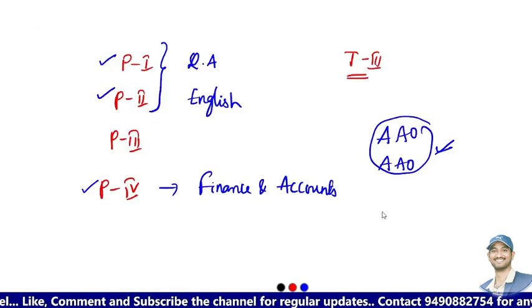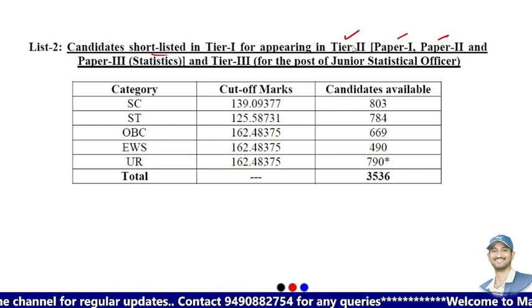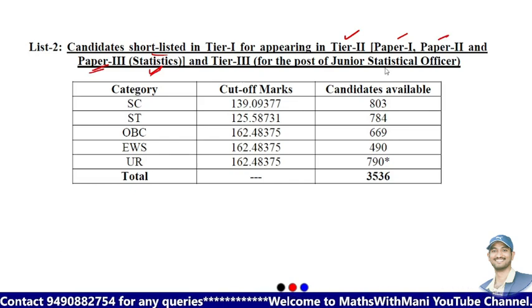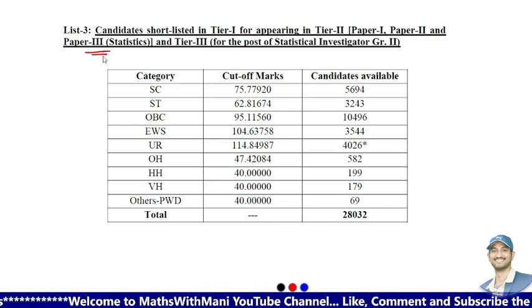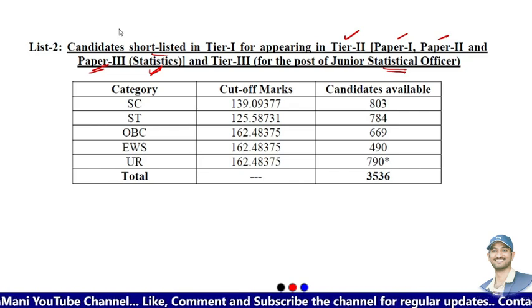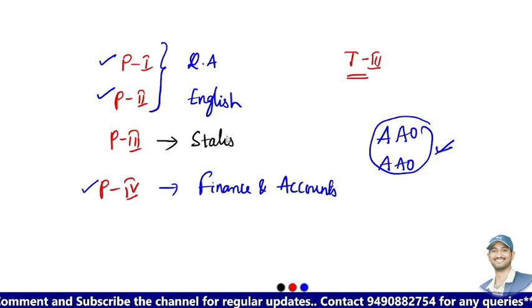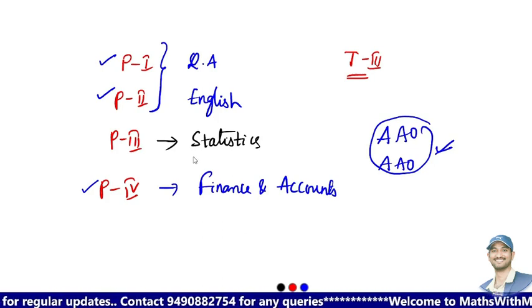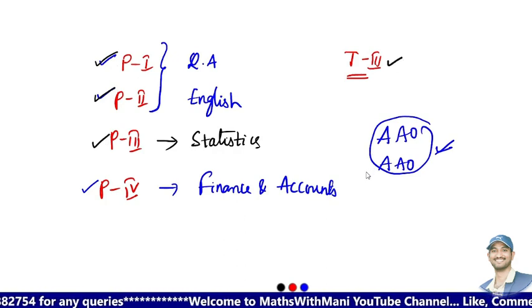Now coming to List 2. List 2 means candidates shortlisted in Tier 1 for appearing in Tier 2 — that is Paper 1, Paper 2, and Paper 3. Paper 3 is the Statistics paper, and Tier 3 is for the post of Junior Statistical Officer. List 2 and List 3 candidates are similar because both are eligible for Paper 3 in Tier 2, which is related to statistics.